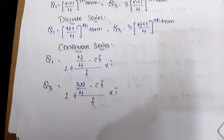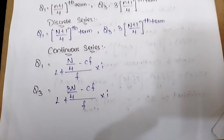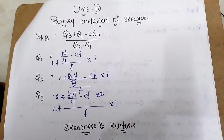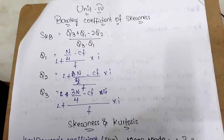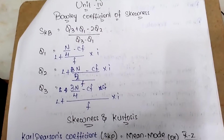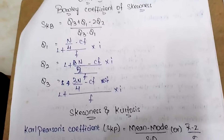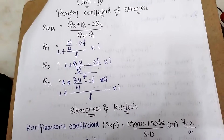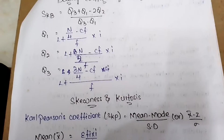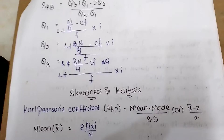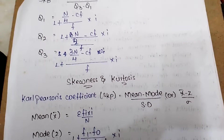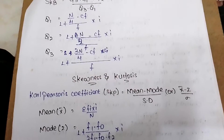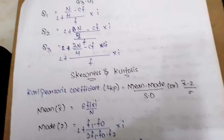Unit 4 — Bowley's skewness: Sk = (Q3 + Q1 − 2Q2) / (Q3 − Q1), where Q1 = L + (n/4 − cf) / f × i.